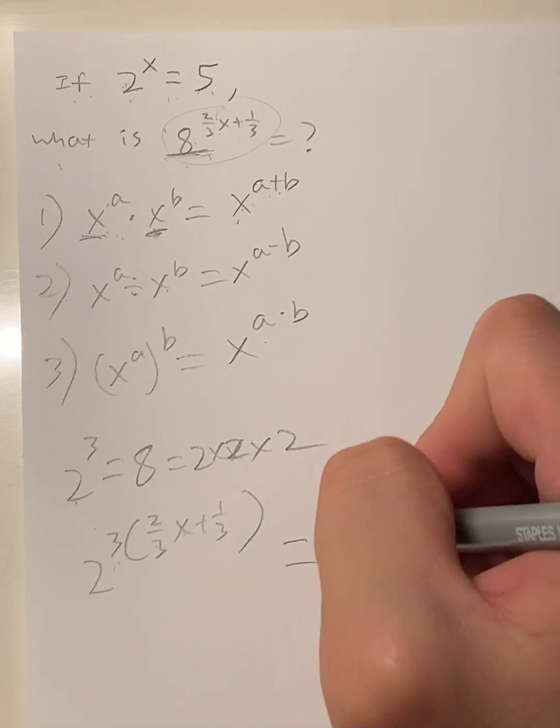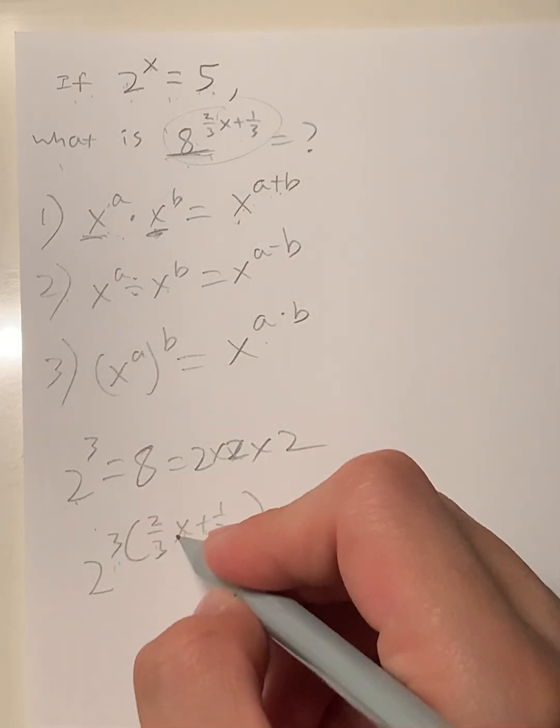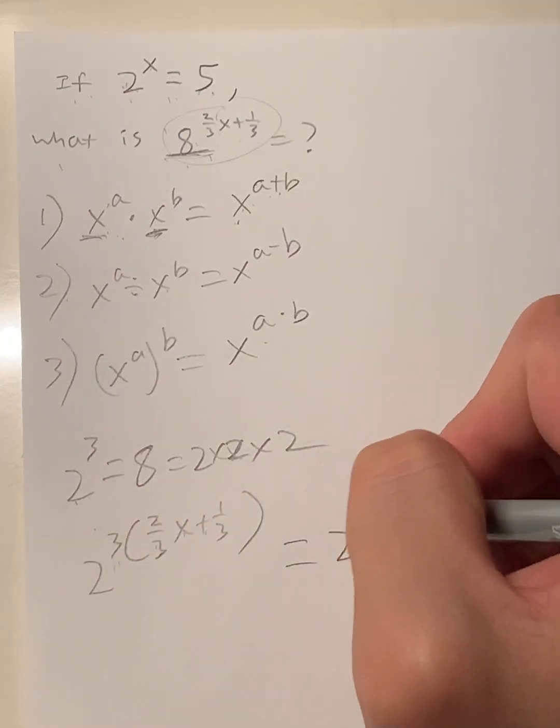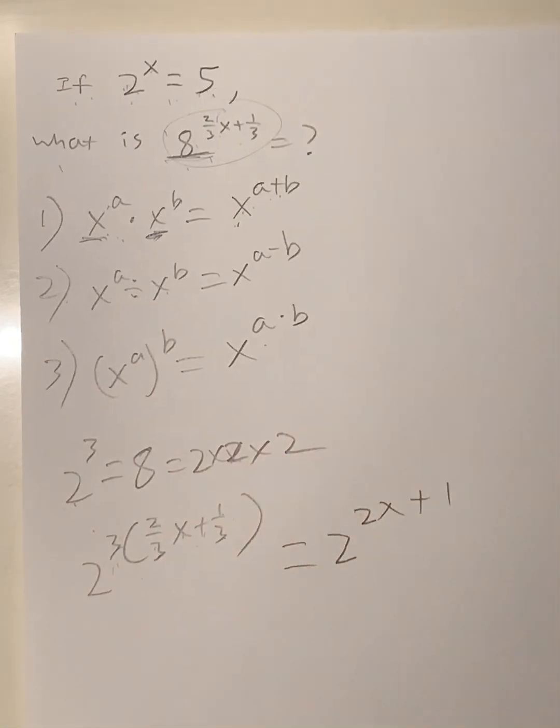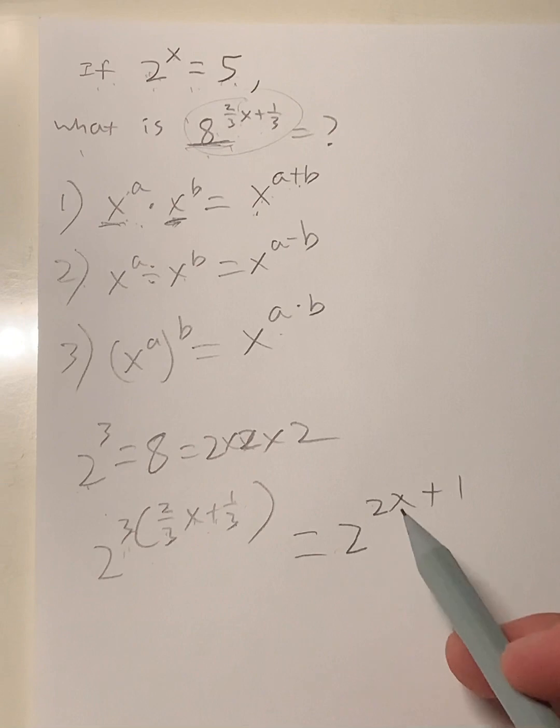This simplifies to 2^(2x+1). Three times 2x/3 equals 2x, plus one third times three, which equals one. So this equals 2^(2x+1).